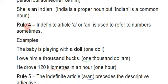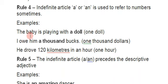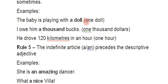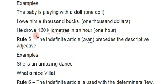Rule number four: the indefinite article 'a' or 'an' is used to refer to numbers — meaning 'one'. For example: 'The baby is playing with a doll.' 'I owe him a thousand bucks' means 1000 dollars. 'He drove 120 kilometers in an hour' — 'an hour' means one hour.